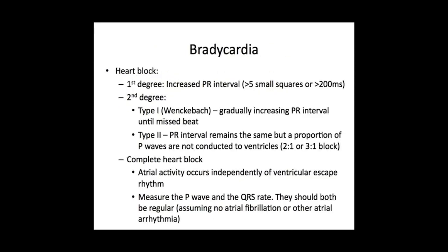If there is a failure of impulse propagation, you then get a heart block. There are three types to know about: first degree, second degree, and third degree — and third degree is often called complete heart block. In first degree, you get basically an increased PR interval greater than 0.2 seconds, but otherwise regular conduction. In second degree heart block, there are two types: type one, also known as the Wenckebach phenomenon, and type two.